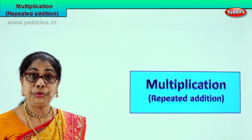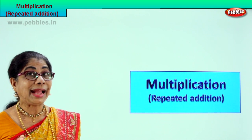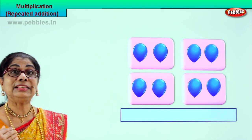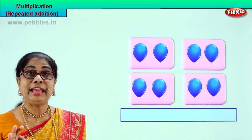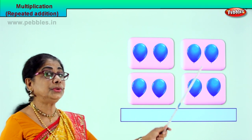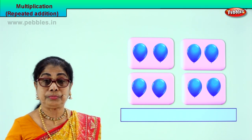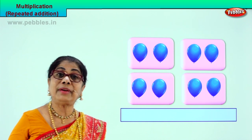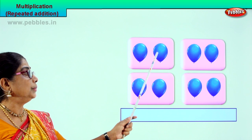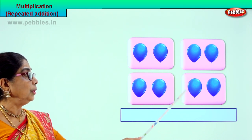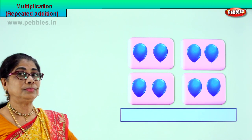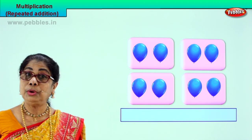Look at the picture I have for you. We are going to count, and counting is very important. Counting carefully. Look, we have one, two, three, four boxes. And in each box we have how many balloons? Two. One, two. One, two. One, two. One, two. Each box, how many balloons? Two.